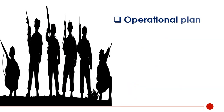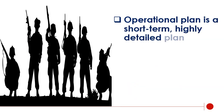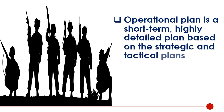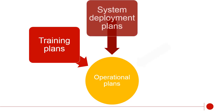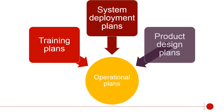An operational plan is a short-term, highly detailed plan based on the strategic and tactical plans. It is valid or useful only for a short time. Examples of operational plans are training plans, system deployment plans, and product design plans.